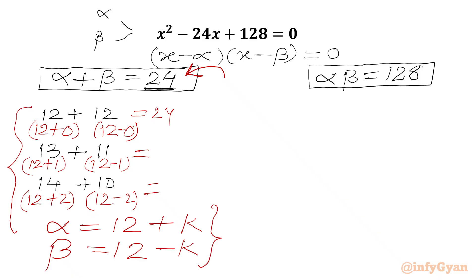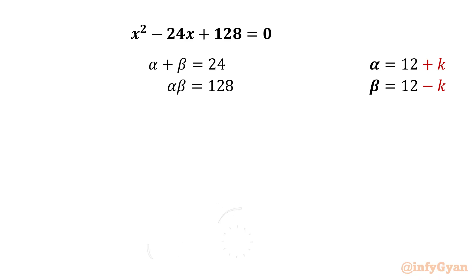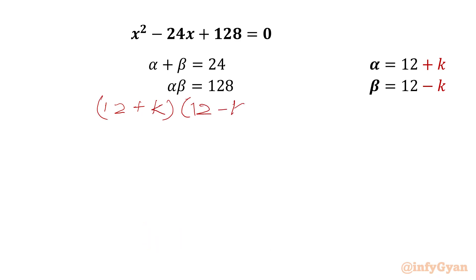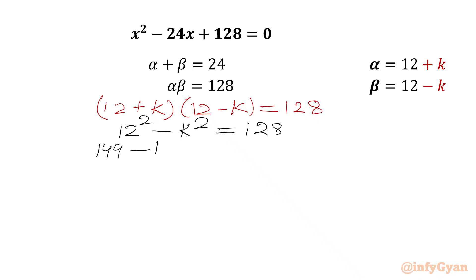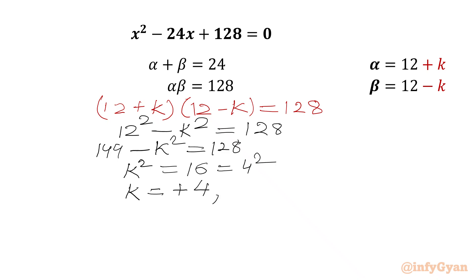Now we apply these alpha and beta values to the product equation. So alpha times beta gives us (12+k)(12−k) = 128. The left-hand side is in the form (a+b)(a−b), so we apply the difference of two squares formula: 12² − k² = 128, which is 144 − k² = 128. Therefore k² = 144 − 128 = 16, which is 4². Taking the square root gives k = ±4.